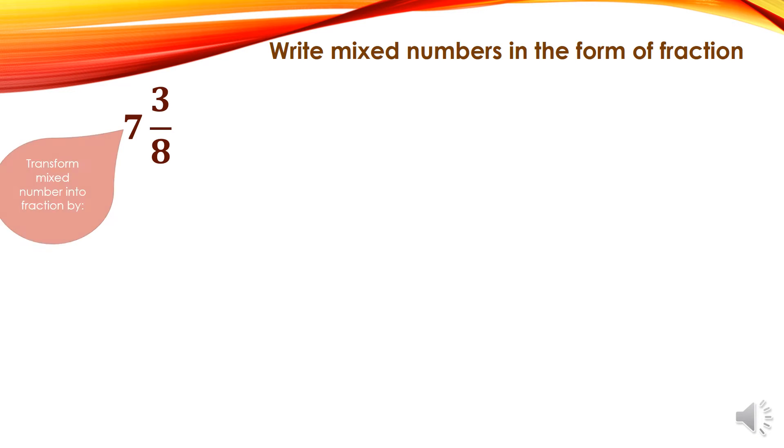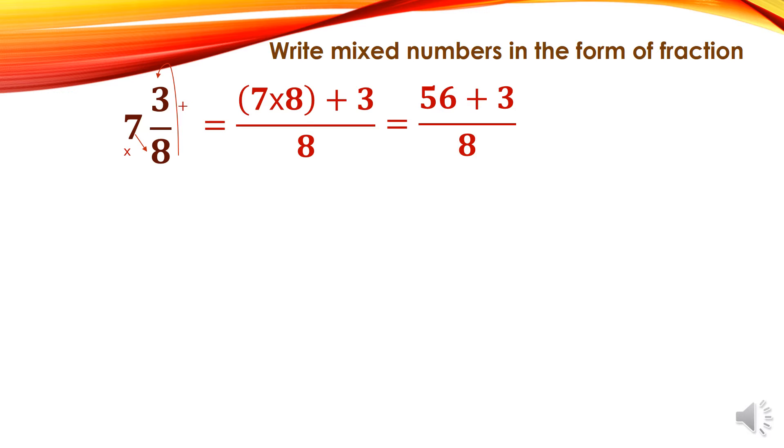First, how can we transform mixed number into fraction? I will multiply 7 times 8 plus 3 to get the numerator and I keep the denominator as it is. Then we have to write 7 times 8 plus 3 up and I keep the 8 as it is. Then 7 times 8 equals 56 plus 3 over 8. I get 59 over 8.